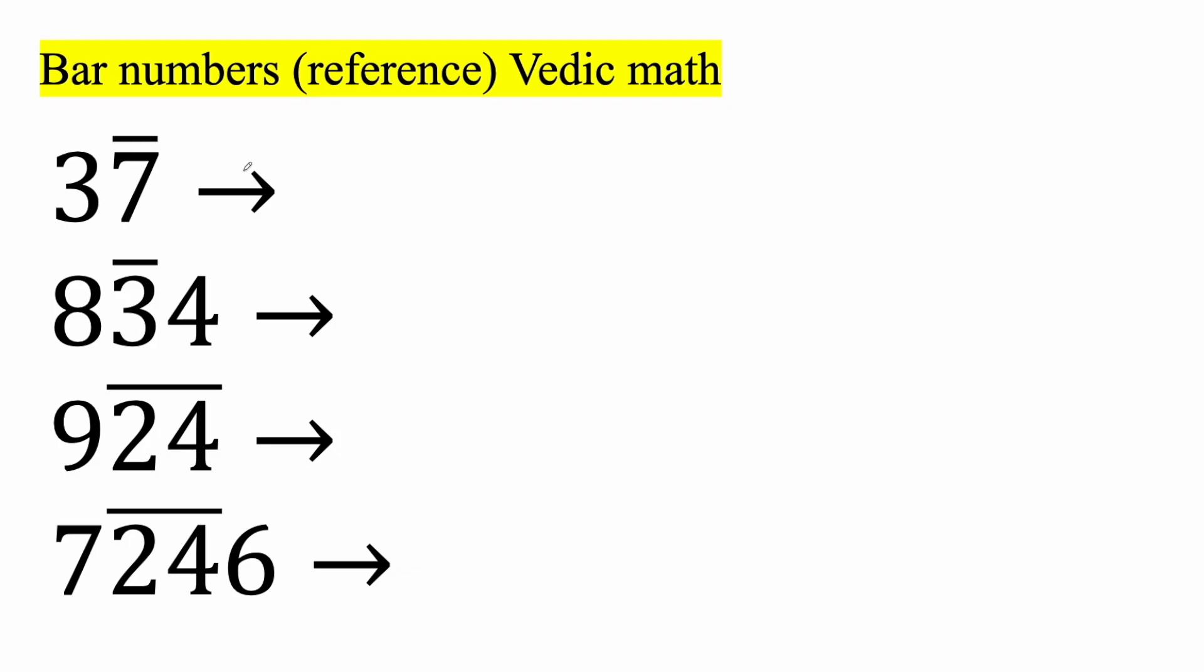Whenever you see this bar right here, what we're actually going to say is like subtraction. So this 3 represents 30. Then we're going to subtract 7 and we're going to get 23. Now bar numbers will be a useful strategy whenever we explore more Vedic math techniques.